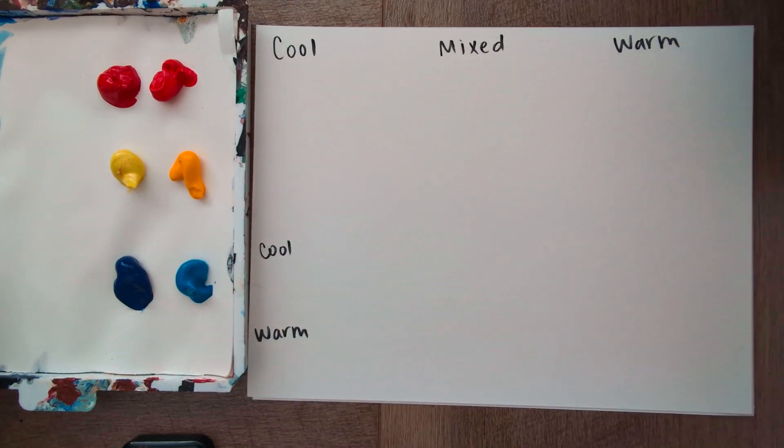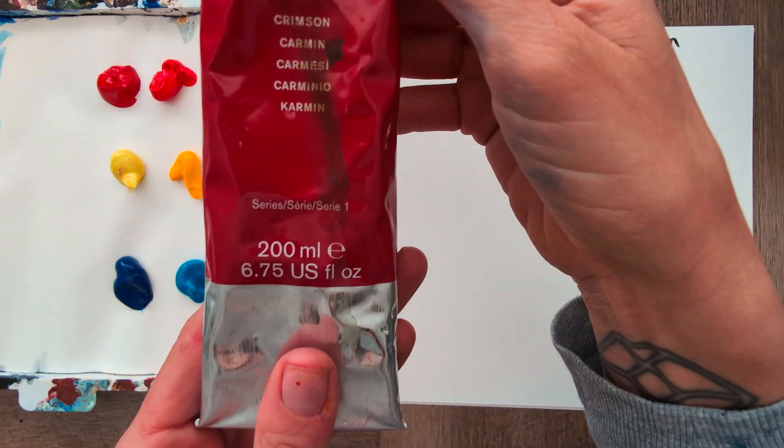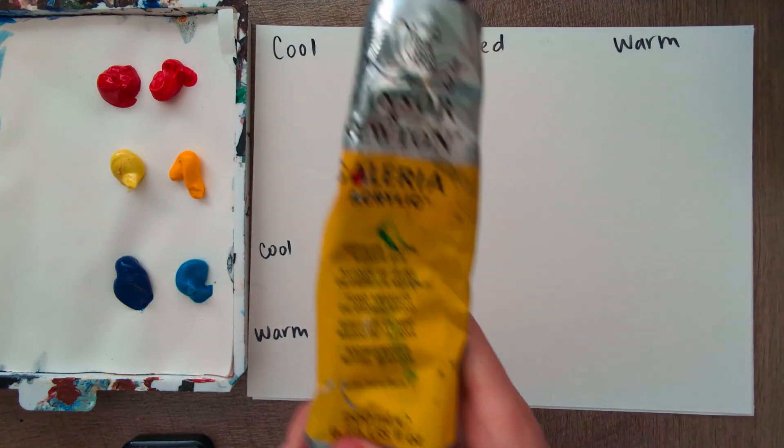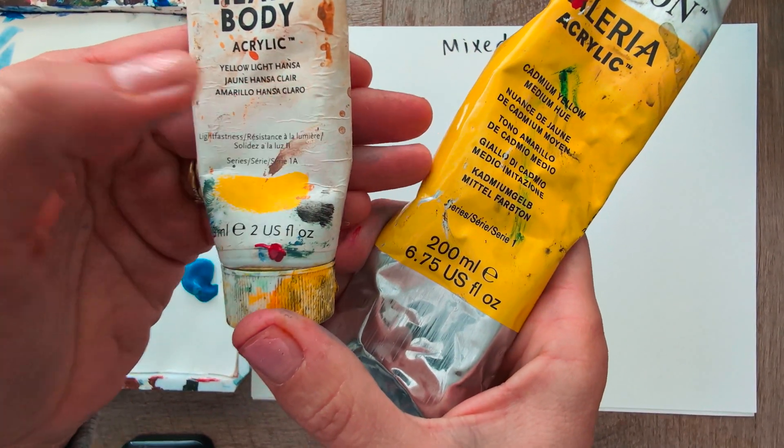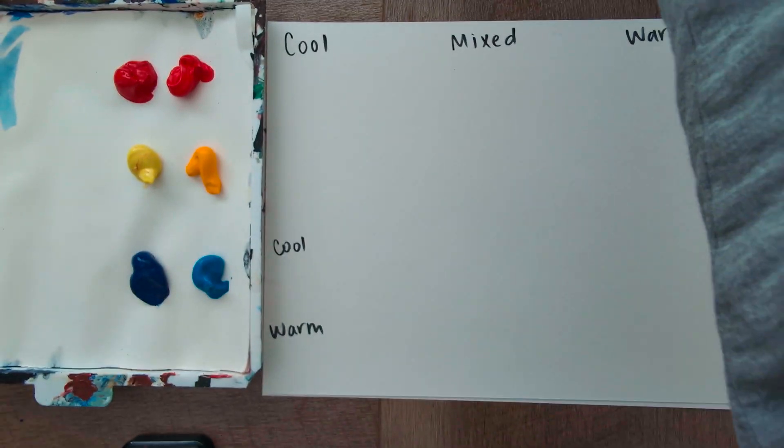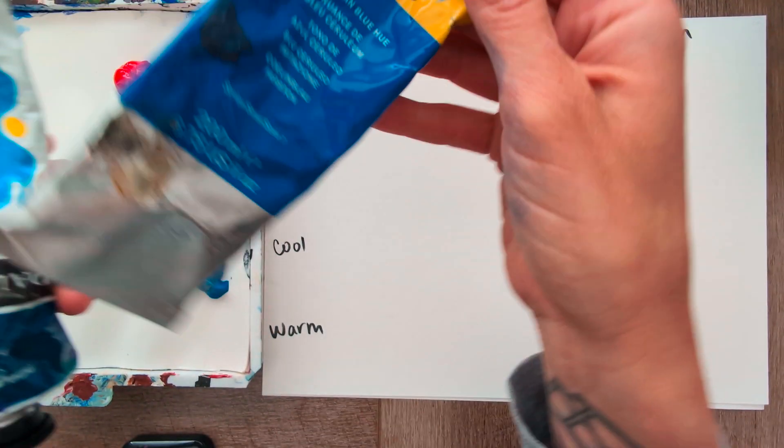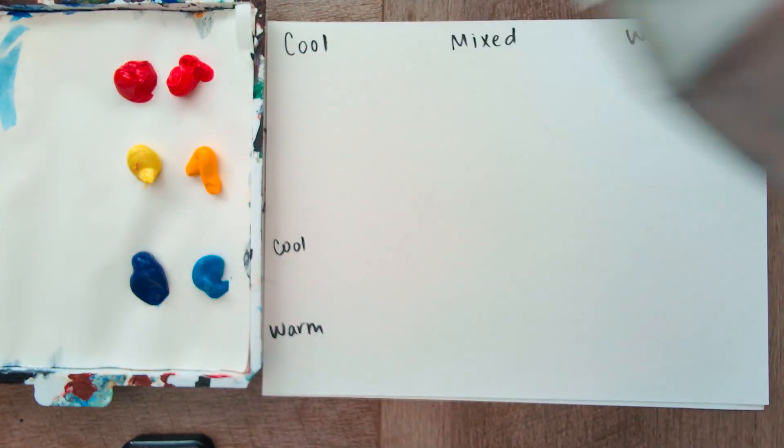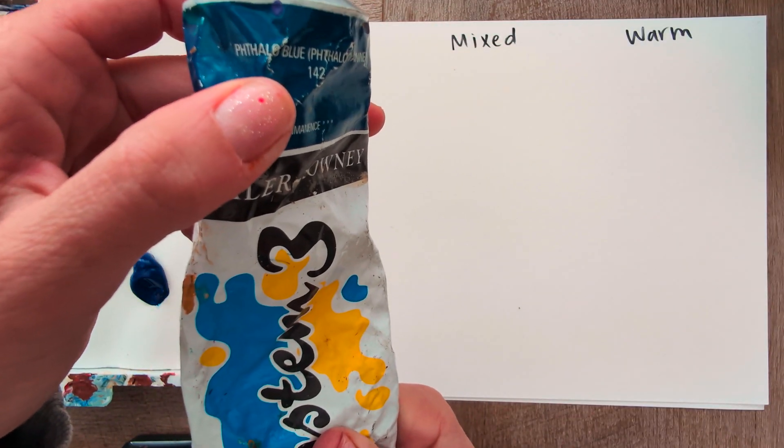Let's look at what they're called really quick. For the red, the warmer red is cadmium red and then crimson is the cooler version. Cadmium yellow is typically what's used for the warm and then a yellow light Hansa for the cool. For blue, there's cerulean blue for the warm blue and then for the cooler blue, a phthalo blue.